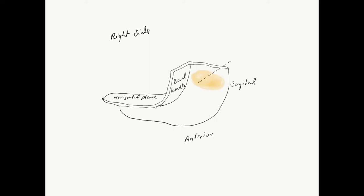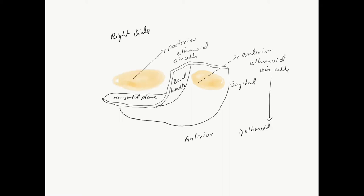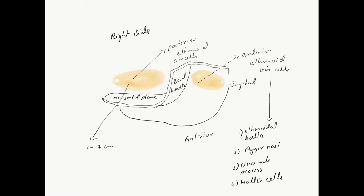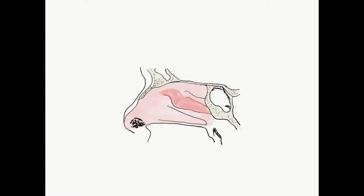The ethmoidal air cells anterior to the basal lamella are the anterior ethmoidal air cells, and those posterior are the posterior ethmoidal air cells. The anterior ethmoidal air cells mainly consist of the ethmoidal bulla, agger nasi, uncinate process, and Haller cells. The posterior ethmoidal cells number 1 to 7, and Onodi cells are one important type of posterior ethmoidal cell.